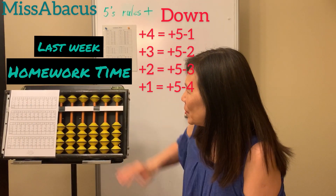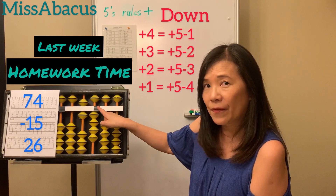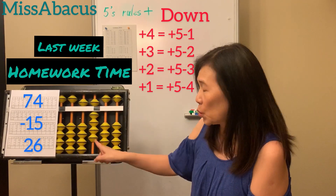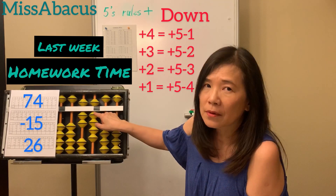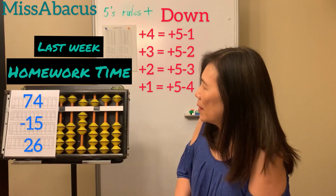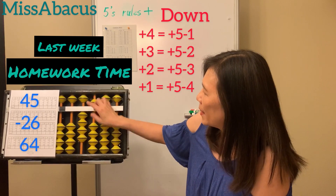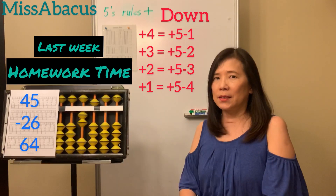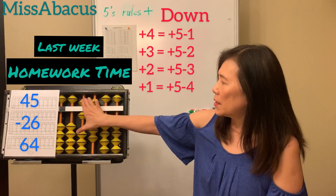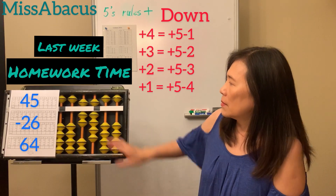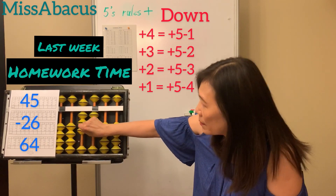Let's do number 39: 74 minus 15. Take away ten, and take away five — no five, so minus ten plus five. Plus 26: plus twenty, plus six — nothing, so rule: minus four plus ten. Answer 85. The last problem: 45 minus 26. Minus twenty, minus six — you don't have five, not enough. Minus ten, plus four. Plus 64 — four: nothing, so take away four's complement six, then plus ten. Don't forget the ten.